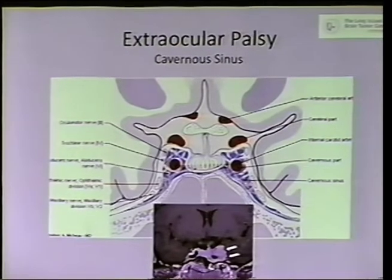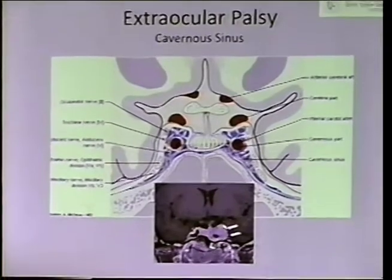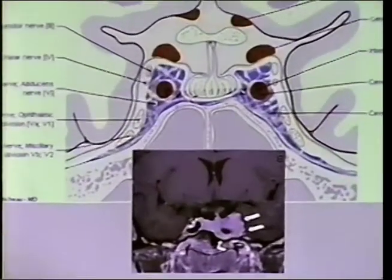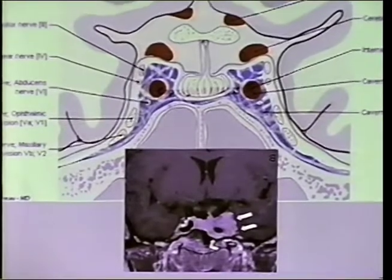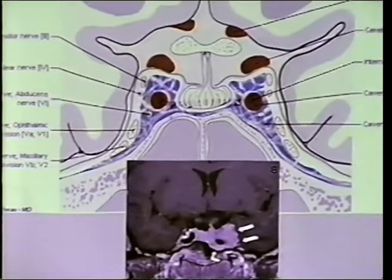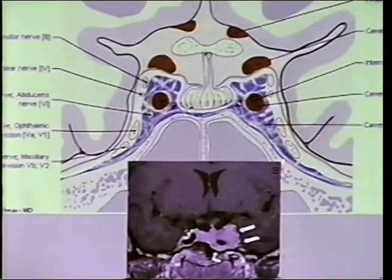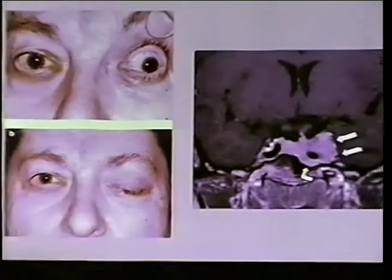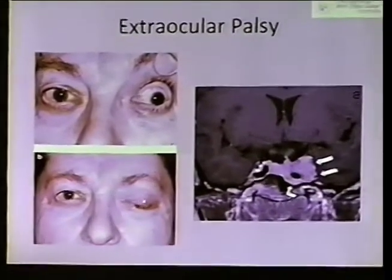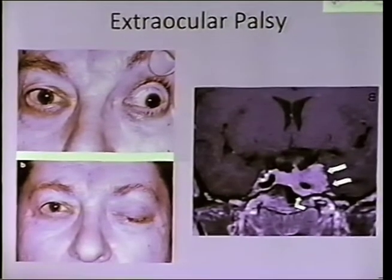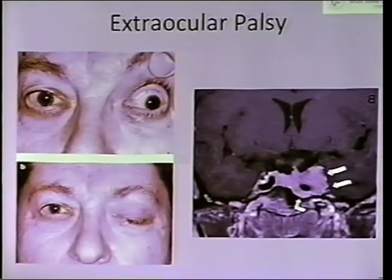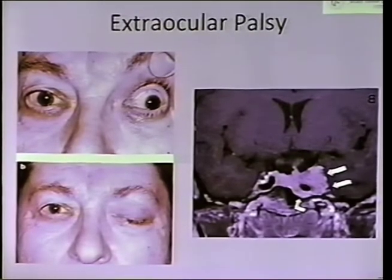When a tumor involves the cavernous sinus, it's around the carotid artery. For the most part these tumors are soft and don't compress the carotid artery, so we don't typically worry about strokes. However, they do affect the nerves that allow for movement of the eye and the eyelid to raise up. You get ptosis — a drooping of the eyelid — and the eye is deviated. Depending on which nerves are affected, you get double vision, where both eyes aren't looking at the same thing at the same time.